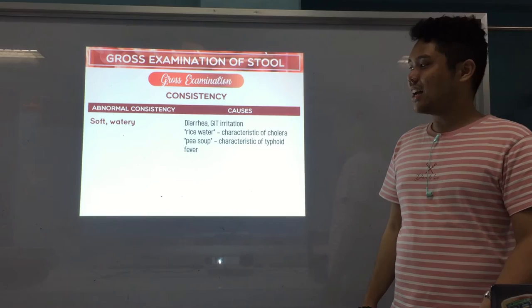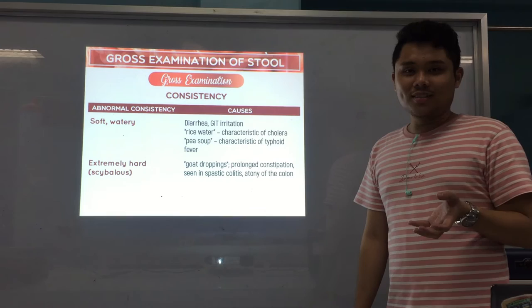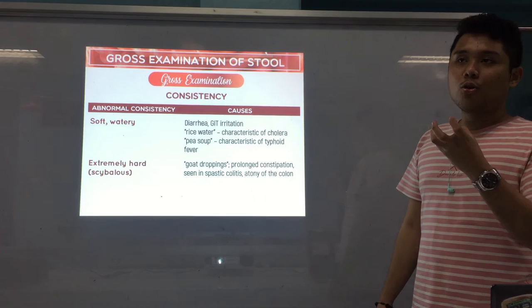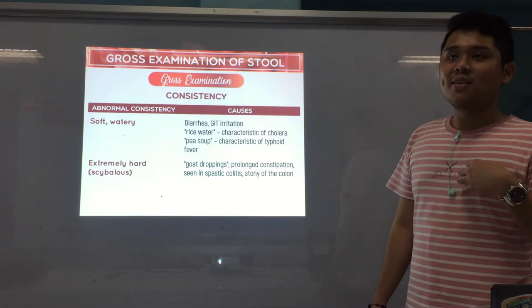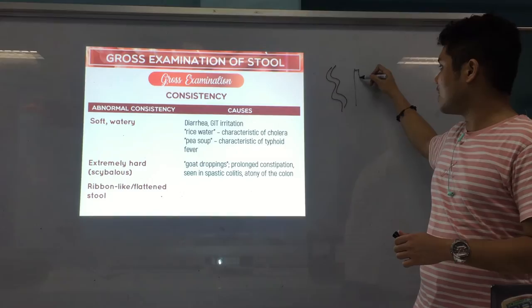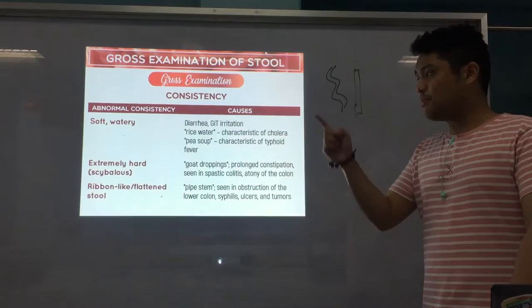Extremely hard or scybalous — also described as goat droppings — caused by prolonged constipation, spastic colitis, or atony of the colon, where the muscles in the colon have become rigid and lost their function. Next, ribbon-like or flattened stool — that means there is an obstruction: pipe stem obstruction of the lower colon, syphilis, ulcers, and tumors.